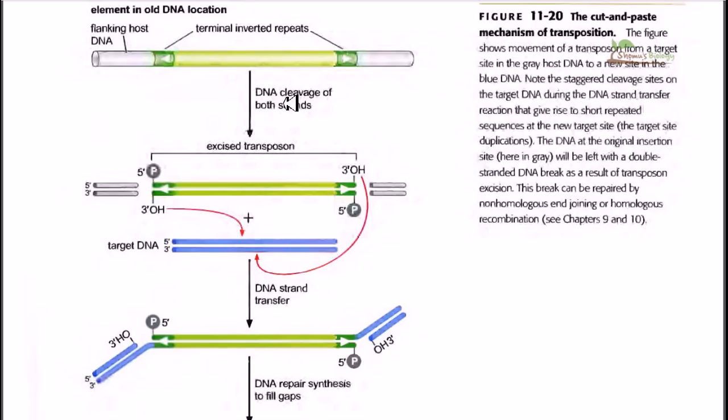They have a particular enzyme called transposase which acts as both endonuclease and integrase enzyme. Here we have the actual transposable element; at both ends we have the terminal inverted repeats. At the center we are having the genes that are coding for the enzyme transposase.